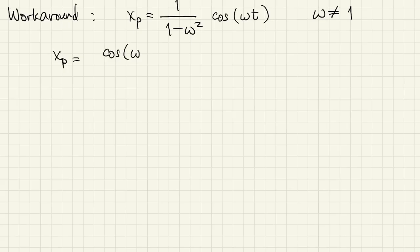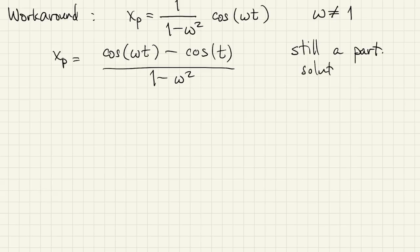Here again is the xp that we got for values of omega other than one. Now, I can add a homogeneous solution to xp, or a multiple of a homogeneous solution, and it still remains a particular solution. Right? When I apply the operator of the equation to it, I'll still get cosine t and then I'll get a zero from the homogeneous part. So this is still a particular solution of the general omega problem.